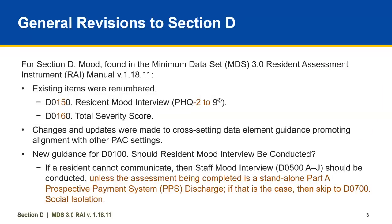It's important to also note that the changes identified in this training have been based on the Minimum Data Set MDS 3.0 Resident Assessment Instrument RAI Manual Version 1.18.11. These changes, as seen on this slide in orange font, will be identified throughout this presentation in orange font color.